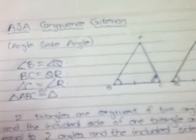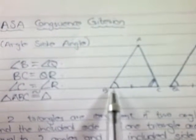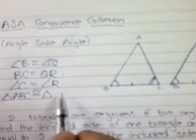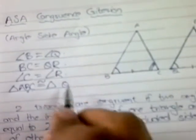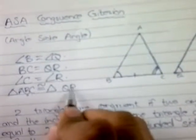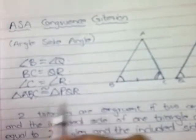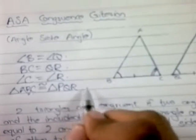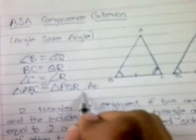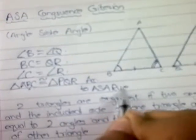Not so fast — we have to check the corresponding vertices. B matches with Q, so write Q in the middle. C matches with R, so write R at the end. The only remaining point is P, so triangle ABC is congruent to triangle PQR, according to the ASA rule.